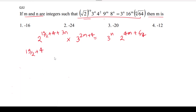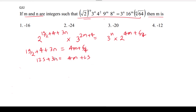Equating the power of 2: 19/2 plus 4 plus 3n equals 4m plus 6/4. From this we get 19/2 which is 9.5, so 13.5 plus 3n equals 4m. This gives us 1.5, so we get 2, giving 4m minus 3n.